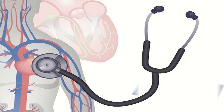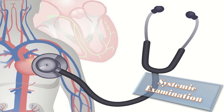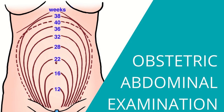After completing the general physical examination, proceed to systemic examination, then perform routine obstetric examination by checking the fundal height, excluding IUGR, assessing liquor volume, estimating fetal weight, and checking fetal heart sounds. Also check for abdominal wall edema and right upper quadrant tenderness.